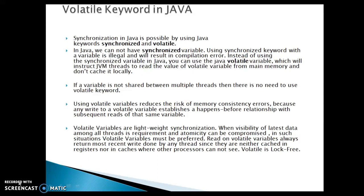Every thread has a local cache. When you declare a variable as volatile, the read and write operations will happen directly from main memory instead of the local cache. If a variable is not shared between multiple threads, there is no need to use the volatile keyword.